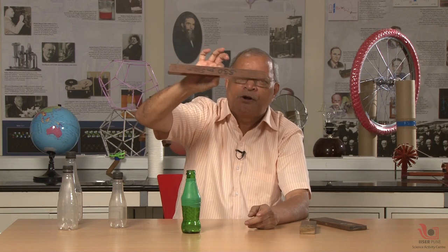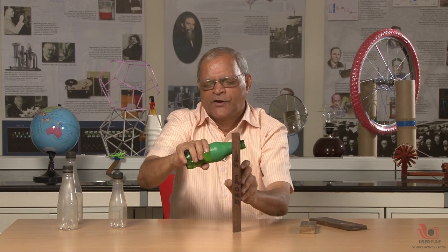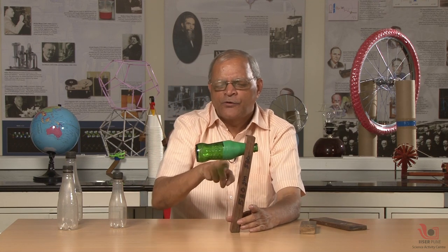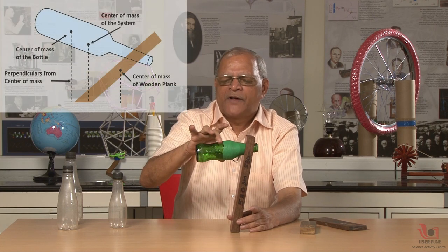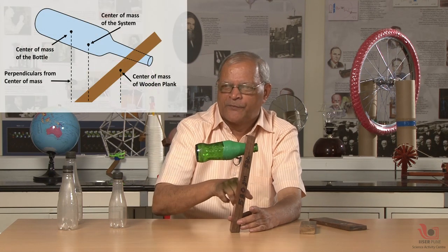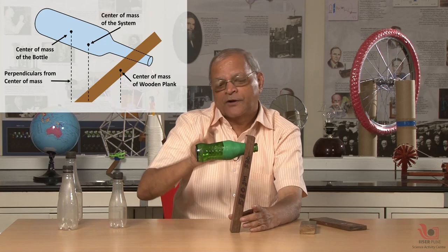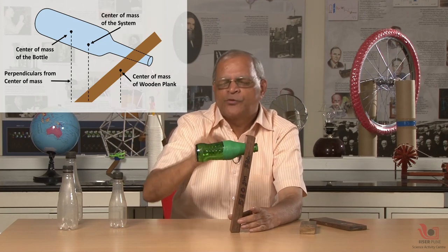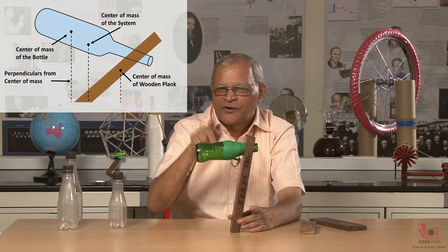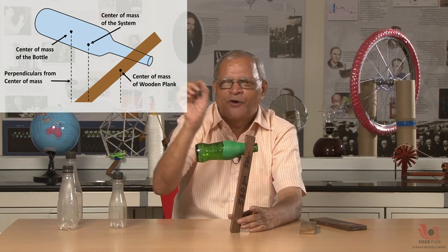Now, I can find the centre of mass of this plank too. The centre of mass of this plank will be between my two fingers — it is here. This centre of mass and that centre of mass — if you ask me where is the combined centre of mass, I can tell you it will come somewhere here. Suppose this is 500 grams and this is also 500 grams — equal mass. Then the combined centre of mass will be the midpoint of the segment joining the two centres of mass.